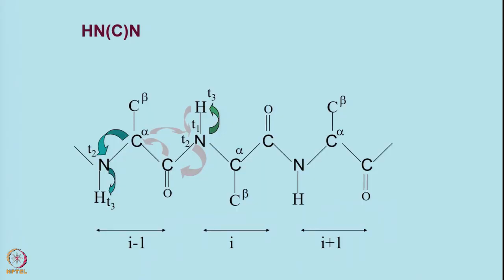Let us continue the discussion using different kinds of experiments. We talked about the HNN experiment, which is particularly useful for studying disordered or unfolded proteins because the N15 dispersion was crucial there. We generated a triplet filter through the HSQC spectrum giving correlations between the amides and N15s of residues I, I minus 1, and I plus 1. A complementary experiment is what I am going to describe now, called the HNCN experiment, which is indicated here.